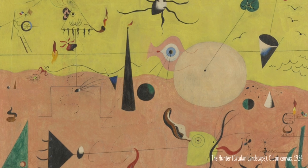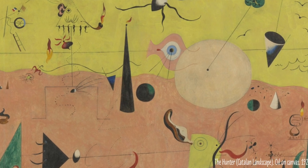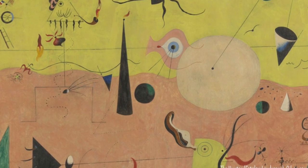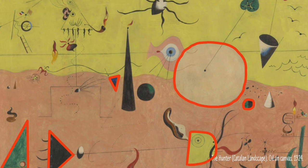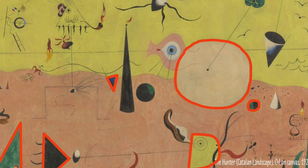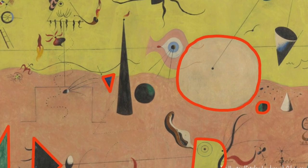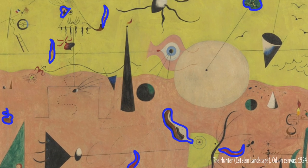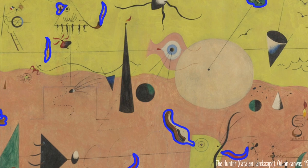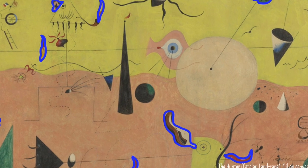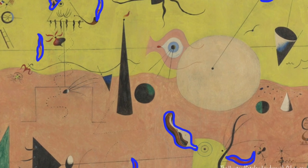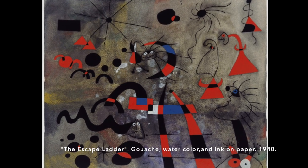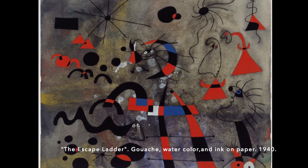His work was filled with many lines and shapes. He used geometric shapes like circles and triangles. He also used irregular shapes, like those found in nature. His work gives us a glimpse about a story.